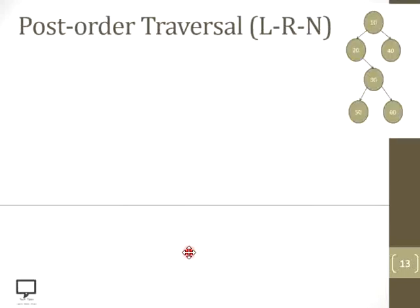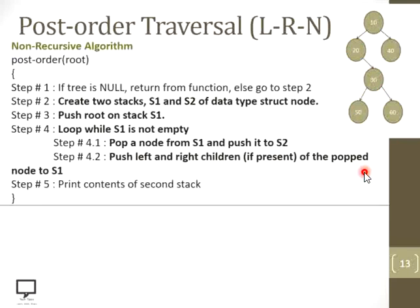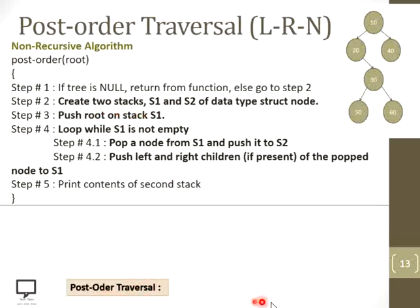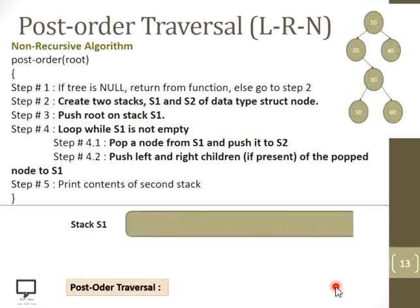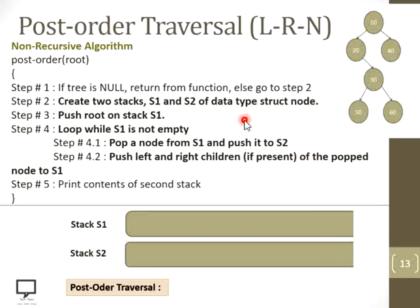Let's dry run this algorithm with the given example. I am explaining the execution of this non-recursive algorithm by creating the stack and performing operations as per the steps of the algorithm. As my tree is not empty, I go to step two and create two stacks. Here is the area where I will show the post-order traversal output. Let's create stack 1 and stack 2. Creation of both stacks is done. Now the next step is to push the root node onto stack 1. The root node is 10 and I am pushing it onto stack 1 — it has been pushed.